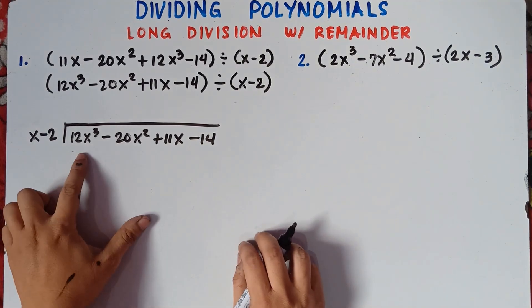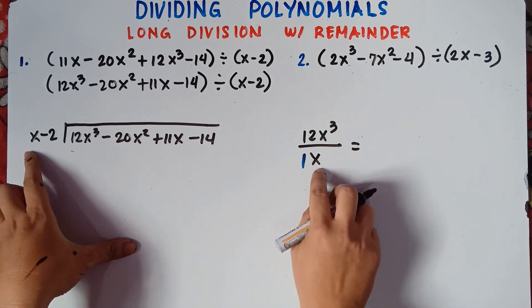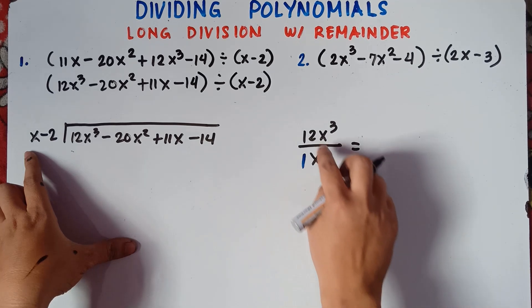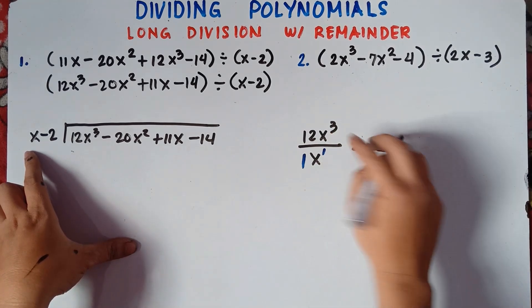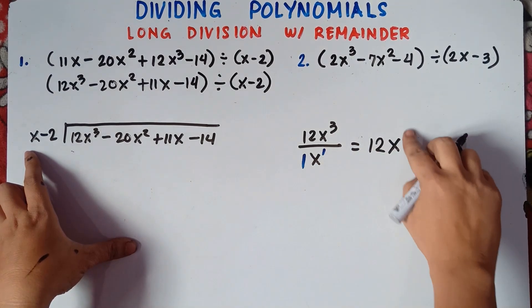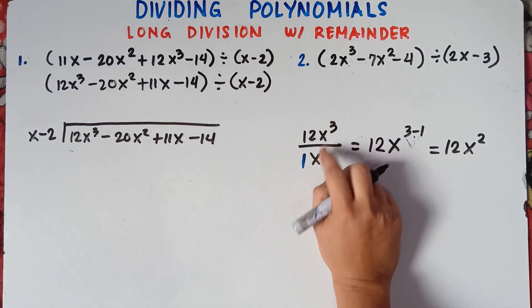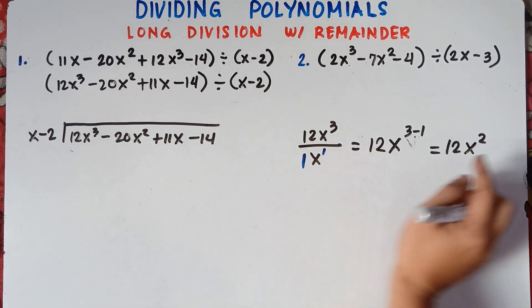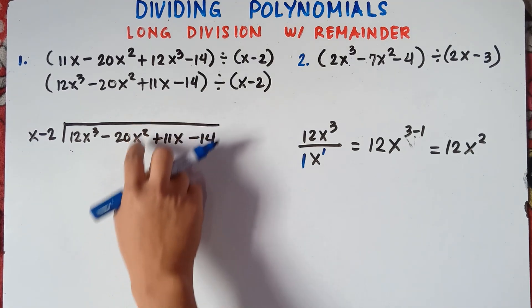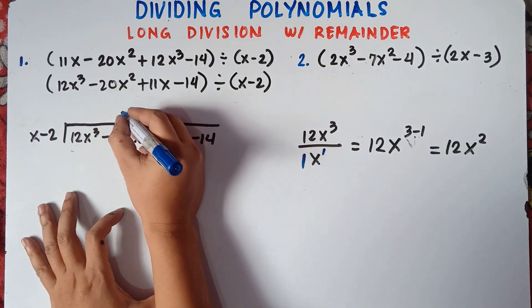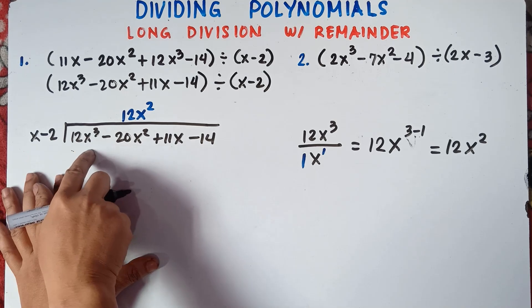First thing to do, class, is divide the leading term by the first term. So 12x cubed divided by x. Understood that there's a 1 in x — any variable has a numerical coefficient of 1 if you don't see any number. So 12 divided by 1 is 12. x cubed divided by x — just subtract the exponent: 3 minus 1 is 2. So the answer is 12x squared. Since our answer is x squared, we align it with the negative 20x squared in the dividend.